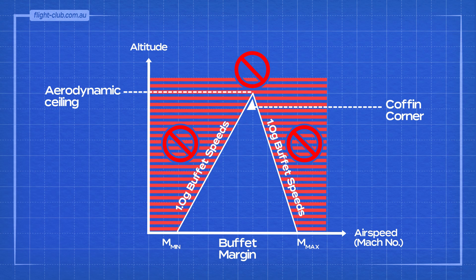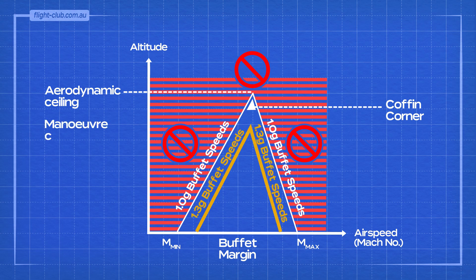To prevent aeroplanes from operating too close to this altitude, an operational limit is set below this point. This altitude is called the 1.3g buffet limit altitude or manoeuvre ceiling, and is usually about 4,000 to 6,000 feet below the aerodynamic ceiling.